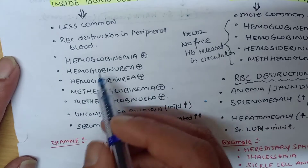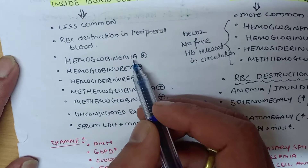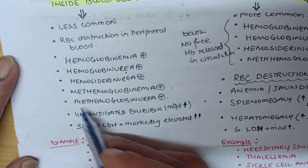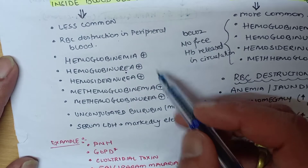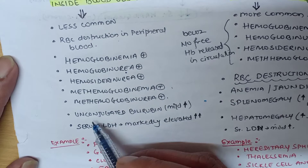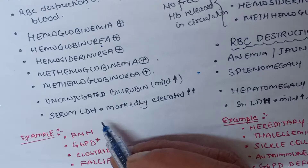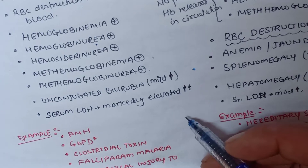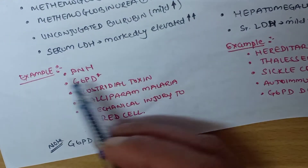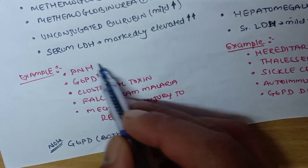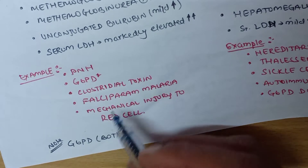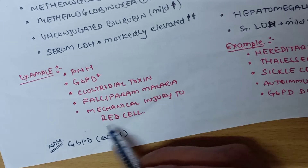In intravascular hemolysis you will see hemoglobinemia, hemoglobinuria, hemosiderinuria, methemoglobinemia, and methemoglobinuria. There is also a mild increase in indirect bilirubin and serum LDH is increased. Examples include paroxysmal nocturnal hemoglobinuria, G6PD deficiency, clostridial toxin, falciparum malaria, and mechanical injury to red blood cells.